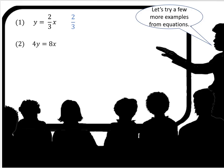For 4y equals 8x, we have to put it in the format y equals kx. So we would divide both sides by 4, and we find that the constant of proportionality is 2.